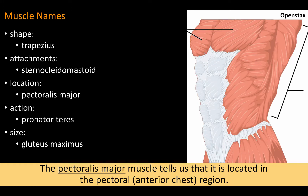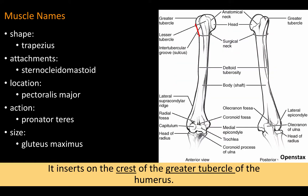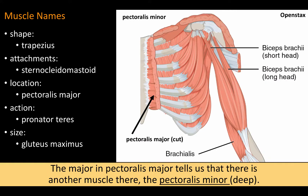The pectoralis major muscle tells us that it is located in the pectoral region. It originates on the sternum and medial clavicle, as well as some ribs. It inserts on the crest of the greater tubercle of the humerus. Its primary action is to adduct the humerus, pulling the arm back towards the midline of the body. The 'major' in pectoralis major tells us that there is another muscle there — the pectoralis minor — deep.